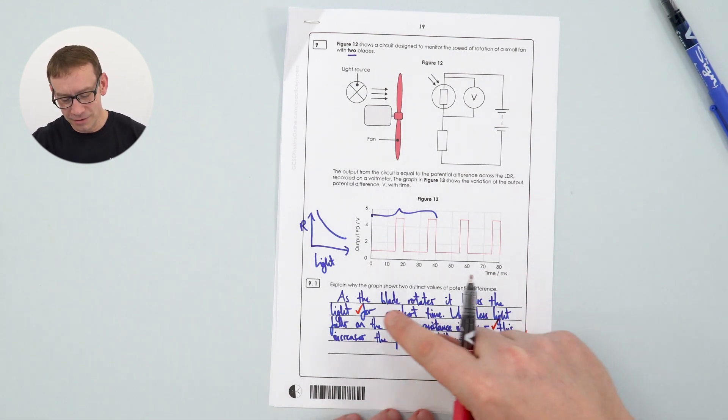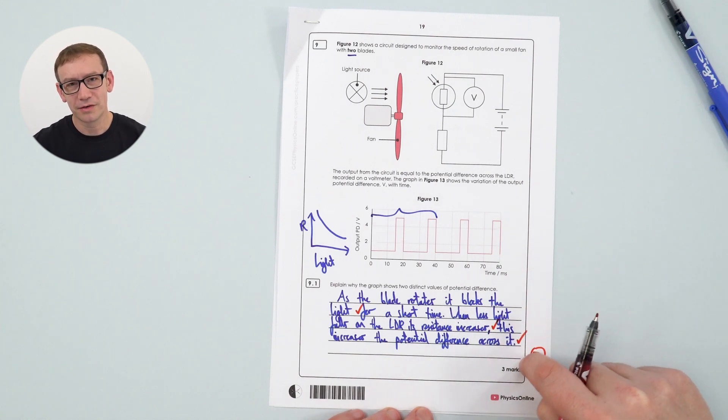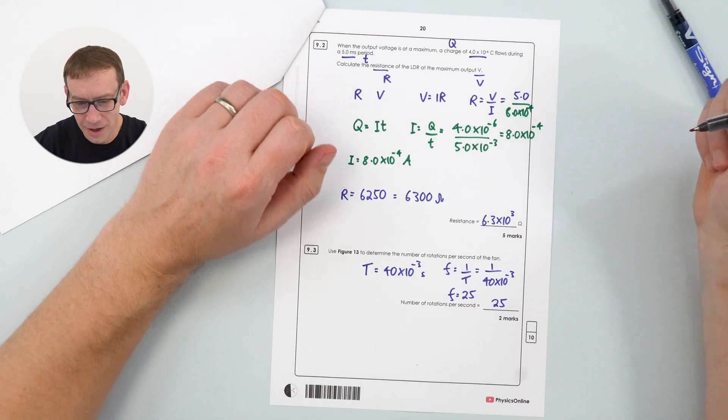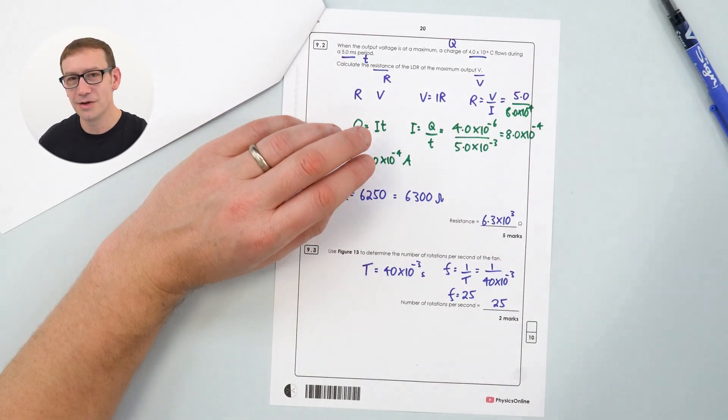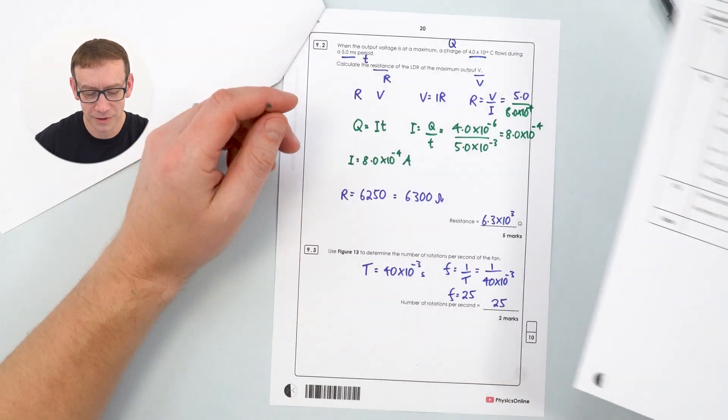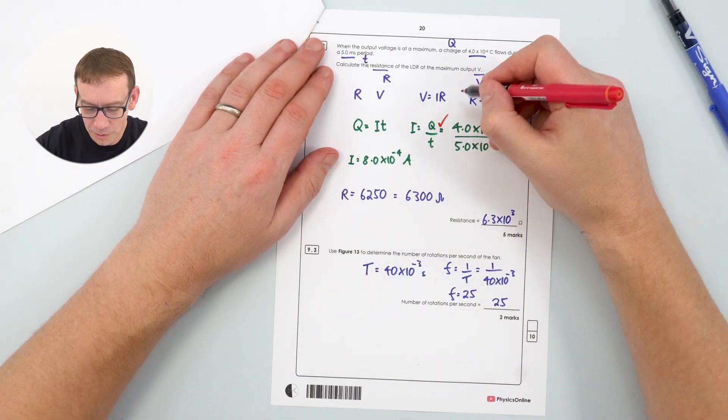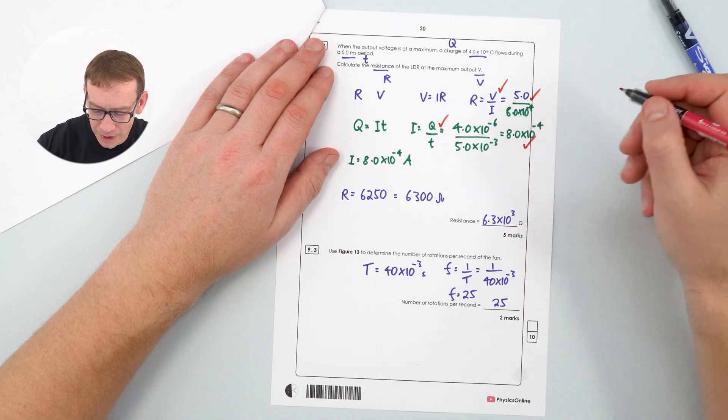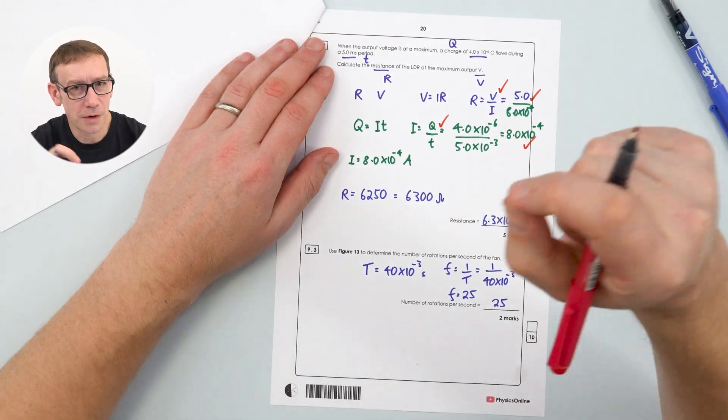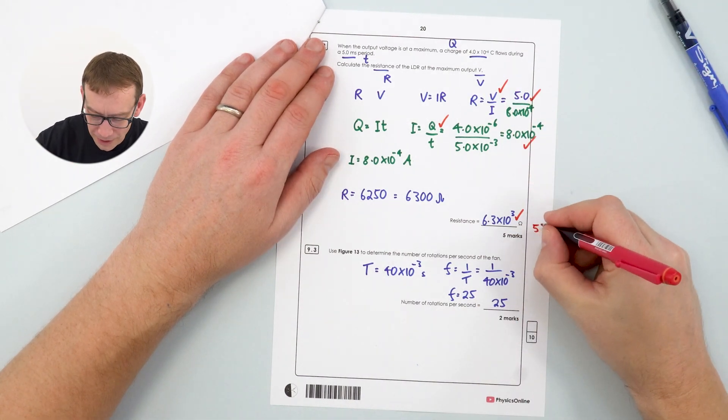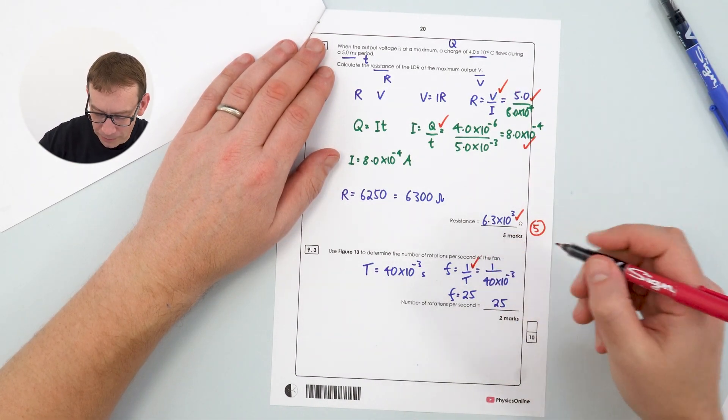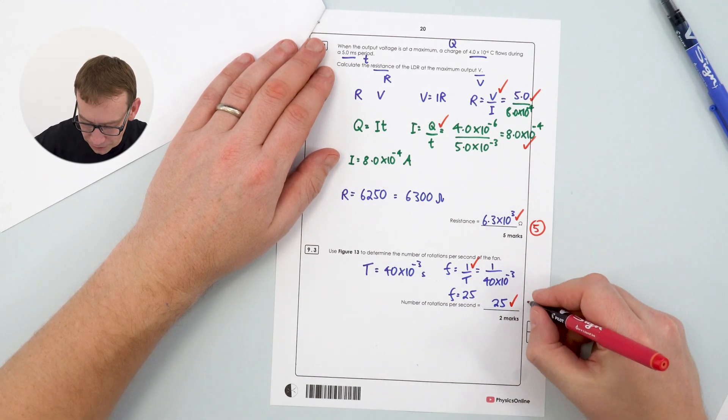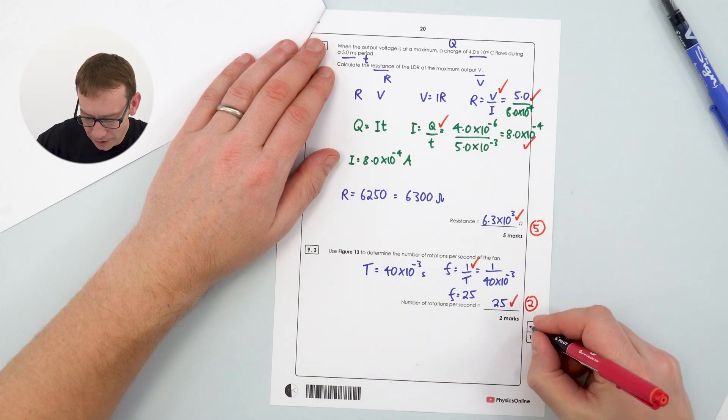What I tend to do when I'm marking is to kind of put ticks by the work, put the number of marks in a circle, and that just makes it a lot easier to count up afterwards. We then have lots of stuff here. Again, you can use the mark scheme here to kind of look at where the marks are gained. So we've basically rearranged that equation, we've rearranged that equation, we've got some numbers here, we've got a number there, and then we've got our final answer to an appropriate number of significant figures. So that's our five marks for that. And again, we have an equation that's been rearranged, the numbers put in, to give our answer as 25. So again, two marks there. So three plus five plus two is ten.